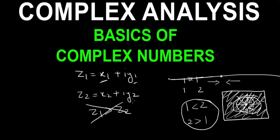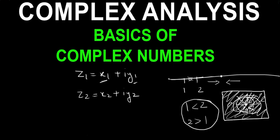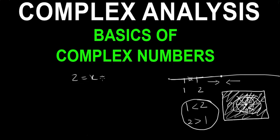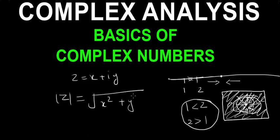In complex numbers, to solve the problem of comparing sizes — since we can't say which number is greater or less — we take the modulus. I will give you the formula of modulus because it is important for solving problems. For z equals x plus iota y, the modulus of z is equal to the square root of x squared plus y squared.